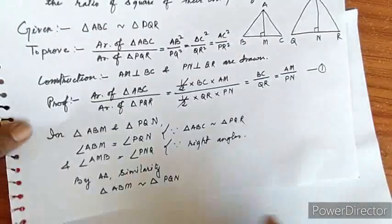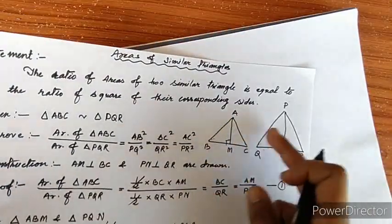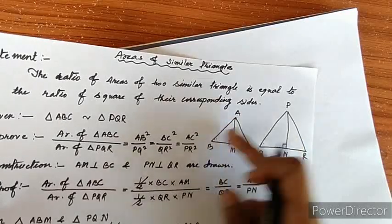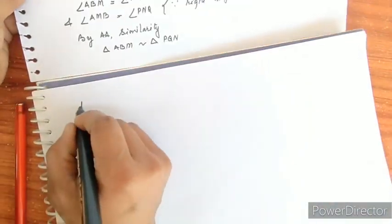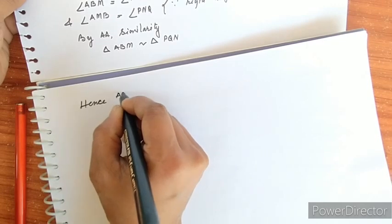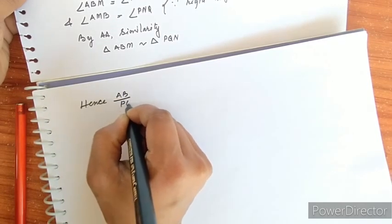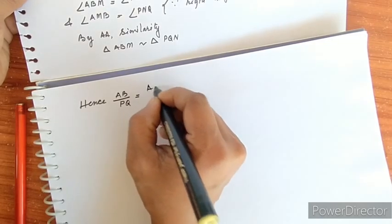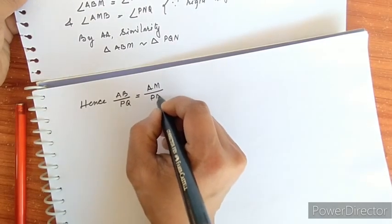Since the triangles are similar, corresponding sides are proportional: AB by PQ equals AM by PN.